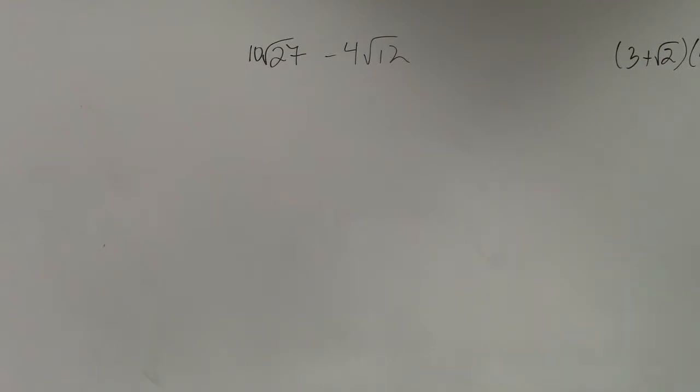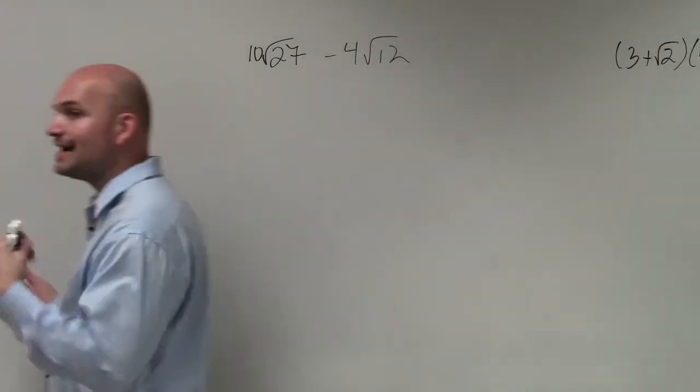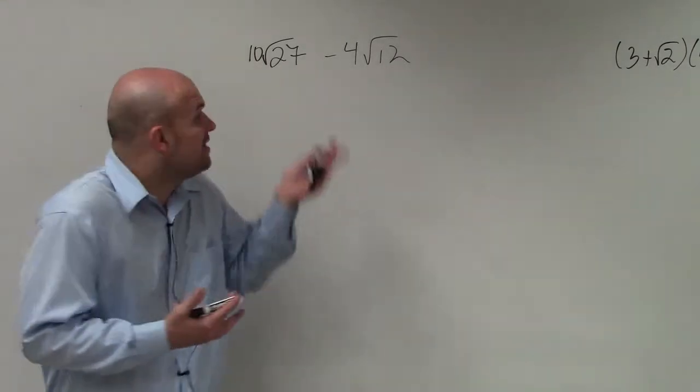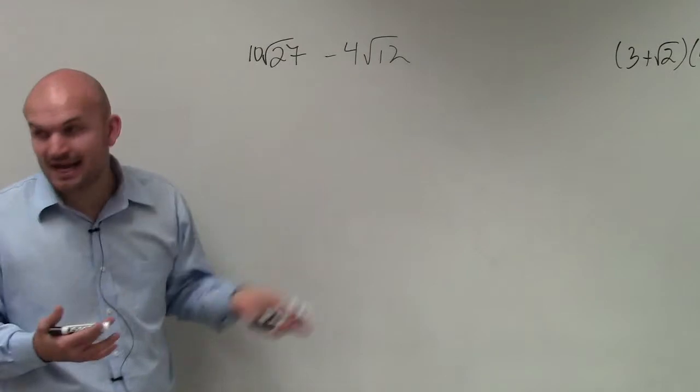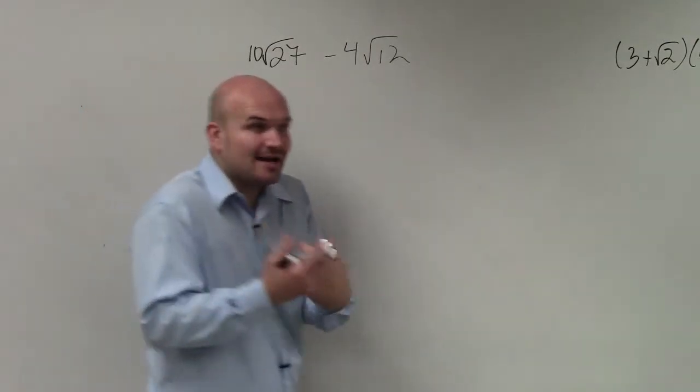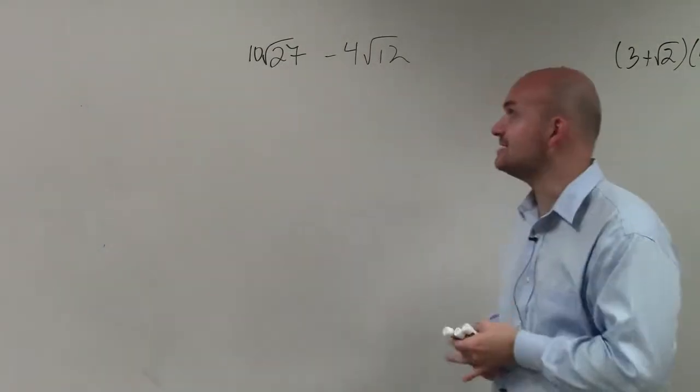So in this example, ladies and gentlemen, when we're adding and subtracting, what we talked about in class was to make sure before you add and subtract, you've got to make sure you simplify. The radicands have to be exactly the same. We cannot add or subtract unless the radicands are exactly the same.